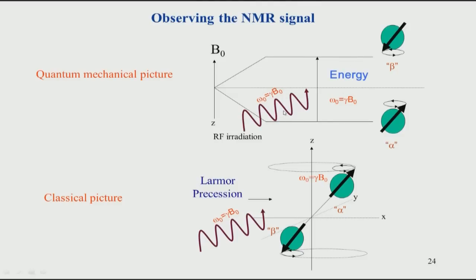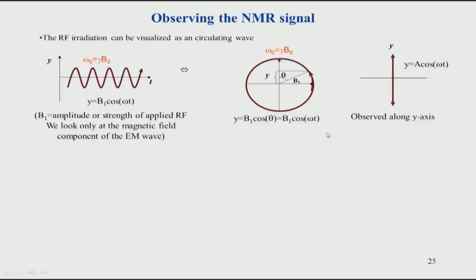Now let us look at the same situation from the classical point of view. The spins are precessing around the magnetic field with a frequency omega equals gamma B0. When we apply an energy radiation that has the same frequency as the rotation of the spins, we say they are at resonance — this is called resonance. To understand how this radiation causes a transition from the ground state to the upper state, we have to use a very important concept in NMR known as the rotating frame.